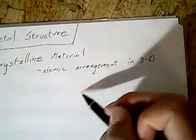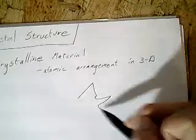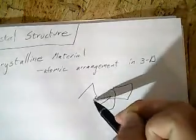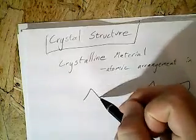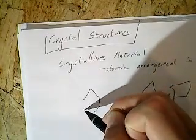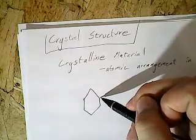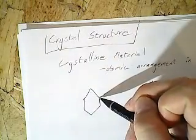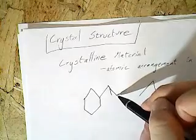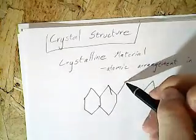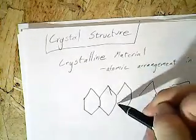You can't have some random shape in order to create what's known as a crystalline material. It has to have something that's fairly regular, something like a hexagon or a square or a box. Something that is a real shape and continues on in this kind of pattern. This is what can be considered a crystalline material.